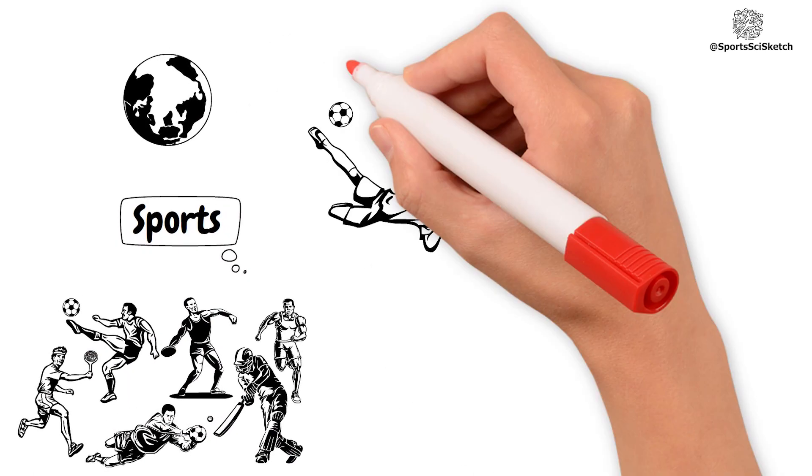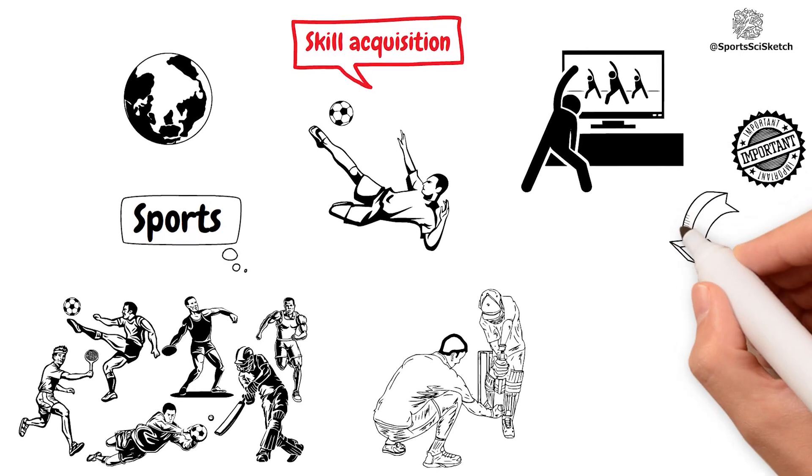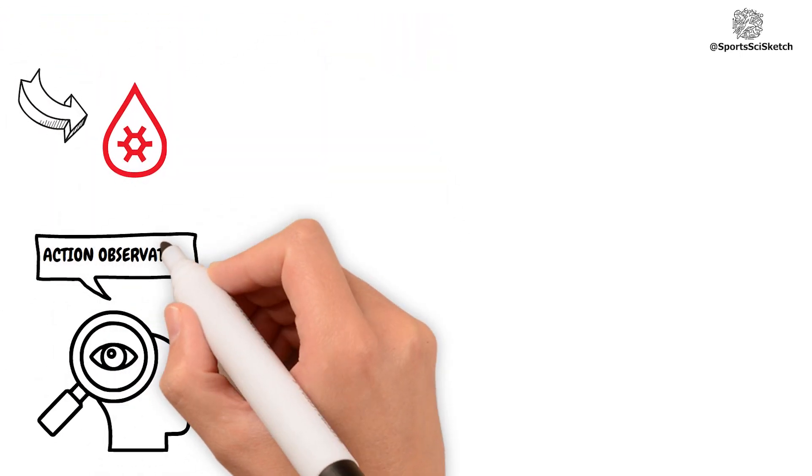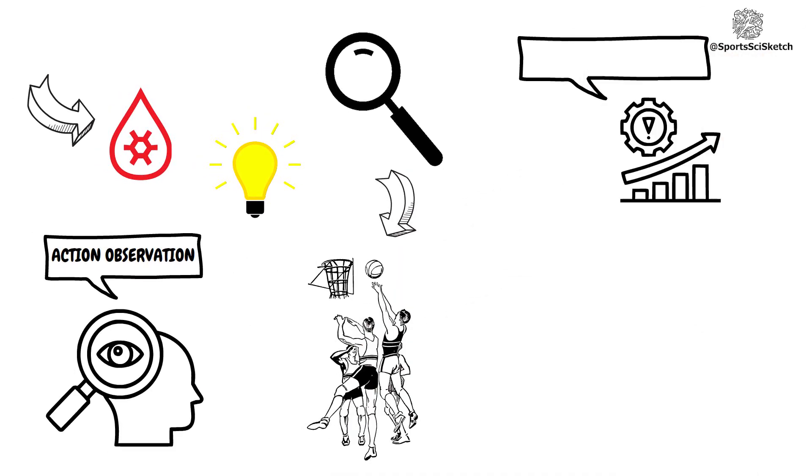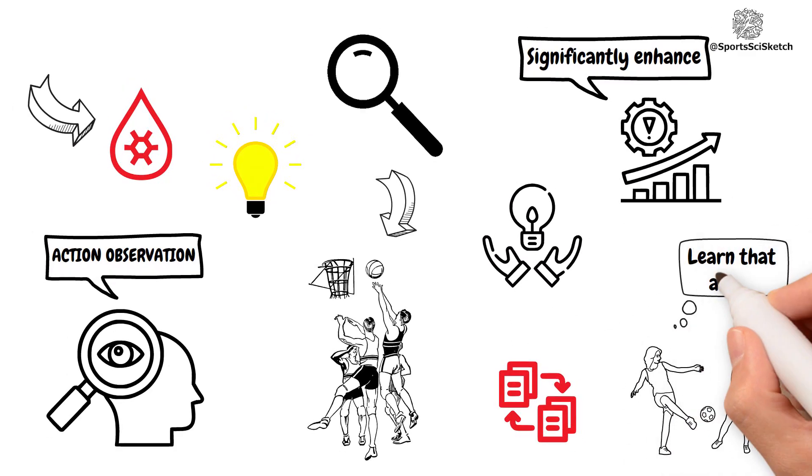In the world of sports, skill acquisition and learning, watching can be as important as doing. This is the essence of action observation, a technique where observing a model performing an action can significantly enhance one's own ability to replicate and learn that action.